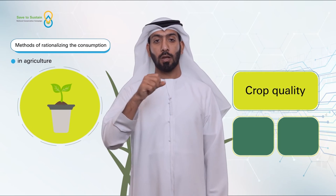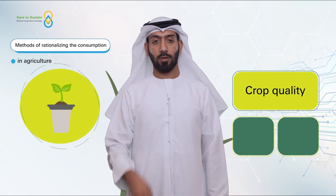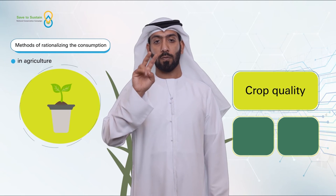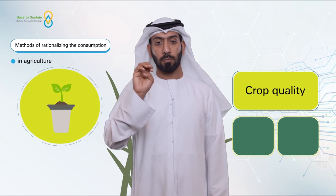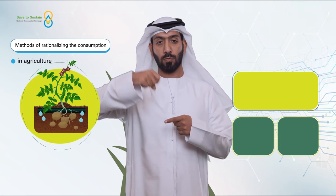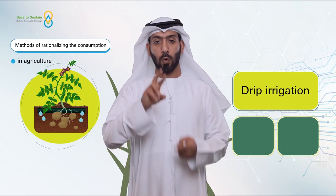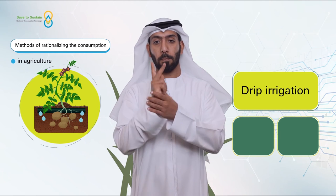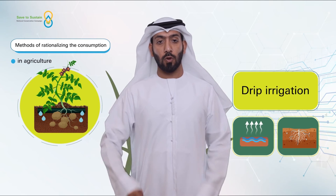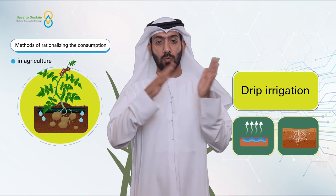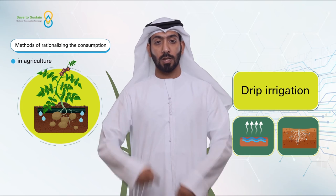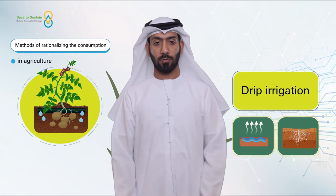Crop quality: make sure to plant drought-tolerant crops that grow in the surrounding environment and can tolerate drought in terms of saving water. The most prominent of these crops are olives, cucumbers, and pears. Drip irrigation: the drip irrigation process delivers water directly to the roots of the plants, thus helping to reduce water evaporation. Drip irrigation provides approximately 80% of the water used in conventional irrigation.